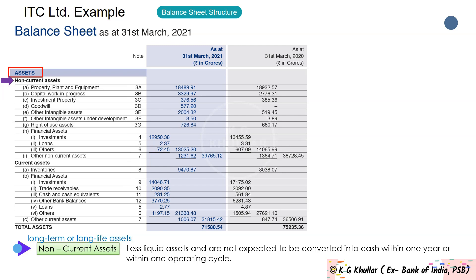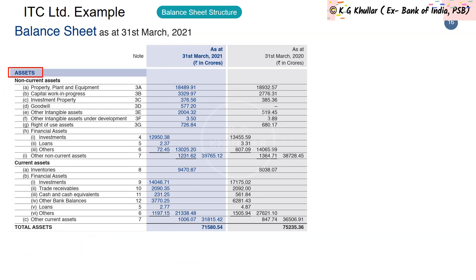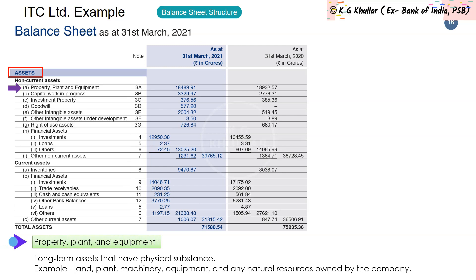PPE — Property, Plant and Equipment — forms a major part of non-current assets. These are long-term assets that have physical substance. Examples of tangible assets treated as PPE include land, plant, machinery, equipment, and any other resources owned by the company. Since ITC Limited is a manufacturing company, PPE forms a major part of its balance sheet.